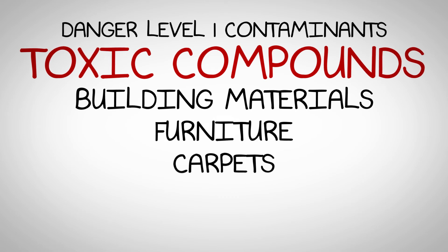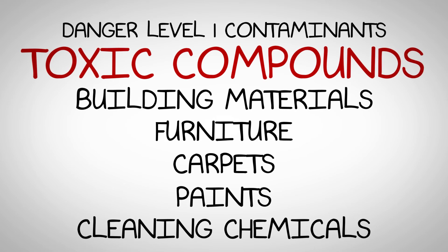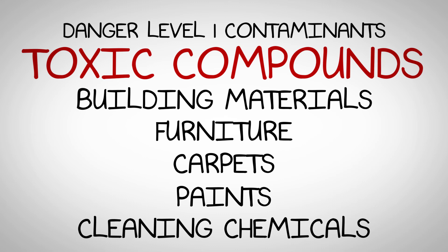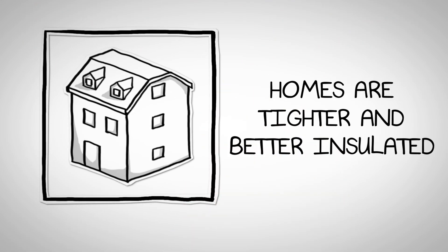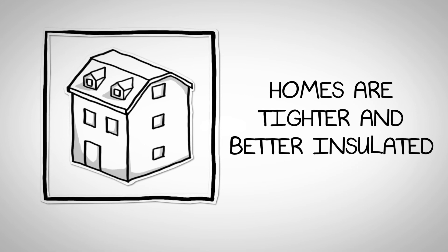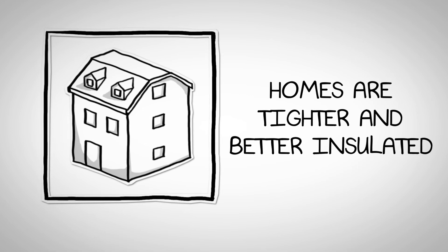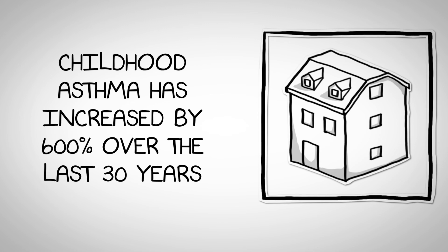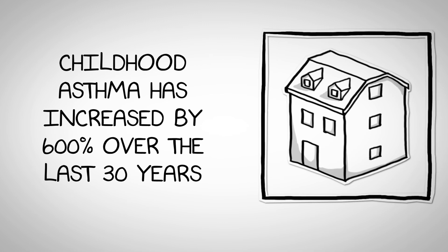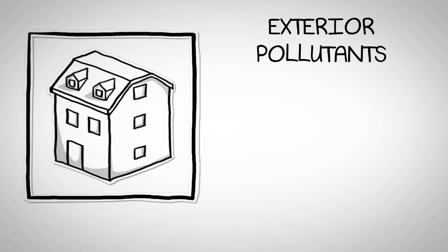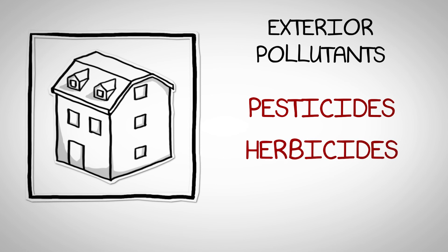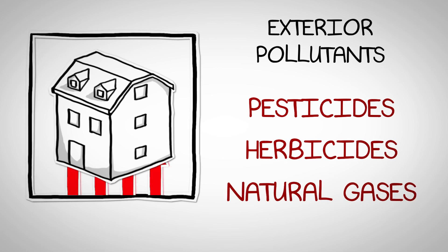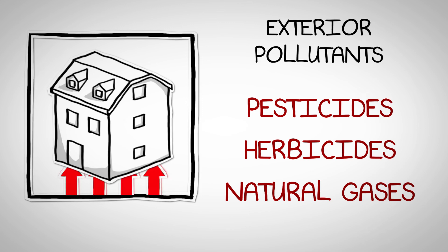Danger level one contaminants are toxic compounds. Building materials, furniture, carpets, paints, and cleaning chemicals can produce a toxic environment in your home that may cause an allergic reaction. Homes are being constructed and re-insulated to be tighter and more energy efficient, which may trap these toxic chemicals in our home. It's no wonder childhood asthma has increased 600% in the last 30 years. These are indoor toxins, and also exterior pollutants — pesticides, herbicides, and even natural gases like methane, which can migrate into a house from the soil.